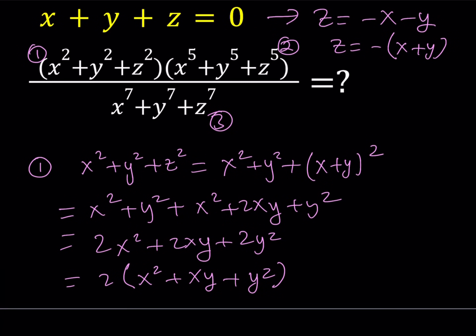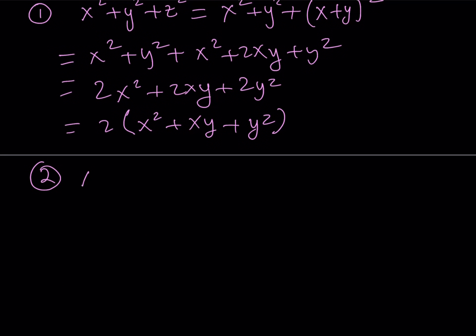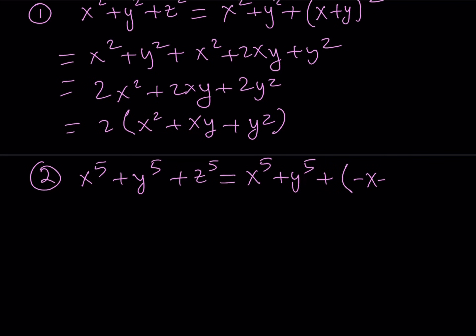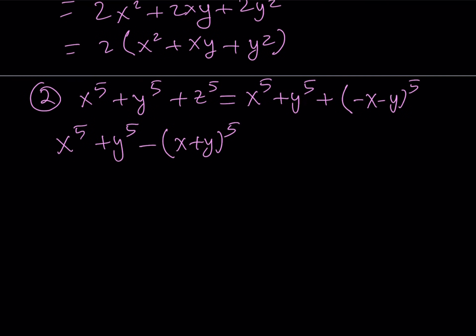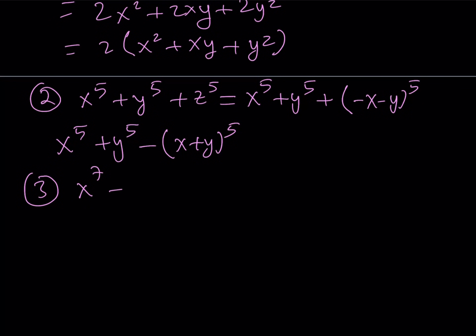For my second expression, the sum of fifth powers, I'll do the same thing and replace z with the opposite of x plus y. When I replace z with negative x minus y, I can take out a negative 1 — since negative 1 to the fifth power is negative 1 — and just pull out a negative sign. In this case, I have to take x plus y to the fifth power, and we're going to use the binomial theorem. Let's also set up the third expression, because we're going to make some changes.